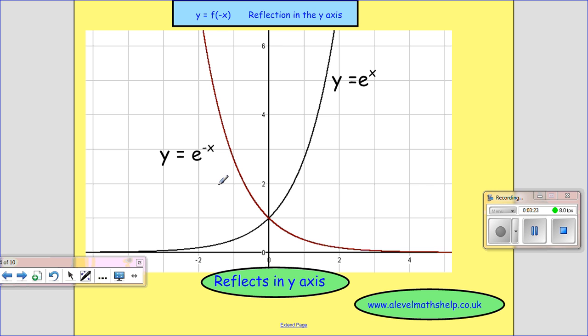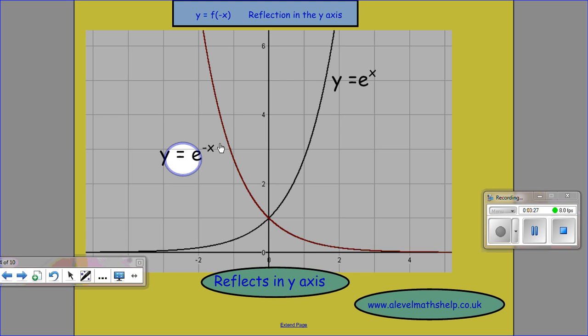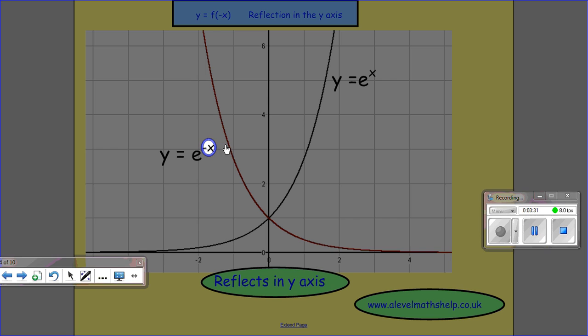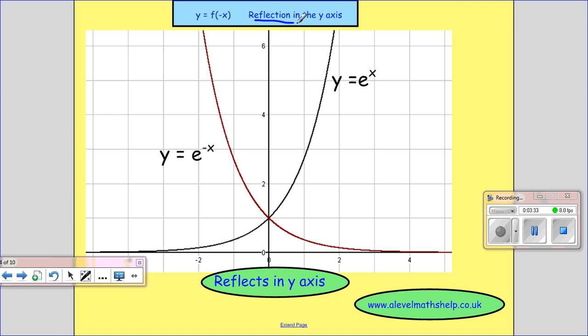This one, this time, we've got y equals e to the minus x. So that's inside our function. And that gives us a reflection in the y-axis. Because we get the answer for when x was positive now, as if it was negative. And when x is negative, we get the answer as if it was positive.